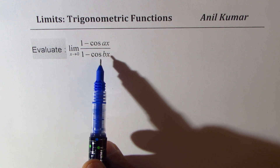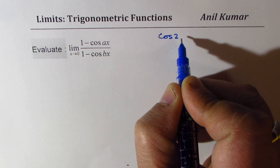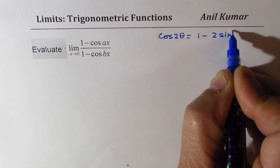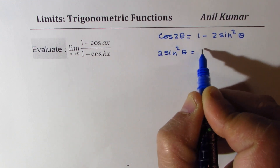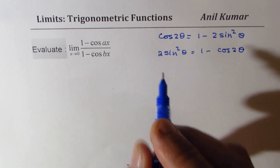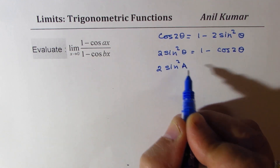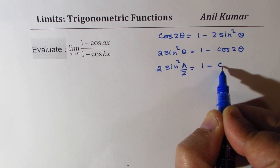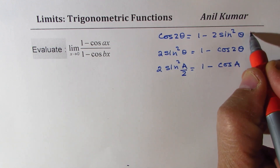We'll try to derive the formula which can be applied here. You know the double angle formula: cos 2theta equals 1 minus 2 sine square theta. We can rearrange and write 2 sine square theta equals 1 minus cos 2theta. Or, in half-angle form, replacing 2theta with A: 2 sine square of A over 2 equals 1 minus cos A. This is the equivalent half-angle formula.